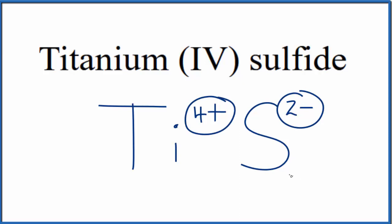If we had two sulfide ions, two times two minus, that would be four minus. That would balance the four plus, give us a net charge of zero.